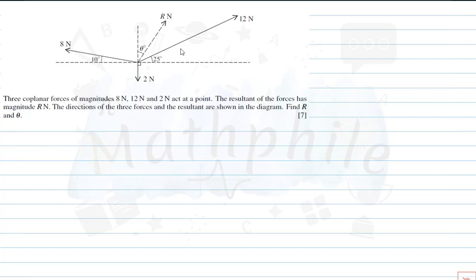So this is a past question: three coplanar forces of magnitude 8 newtons, 12 newtons, and 2 newtons act at a point. The resultant of the forces has magnitude R newtons. The direction of the three forces and the resultant are shown in the diagram. Find R and theta. This is seven marks — don't be deceived by the mark count; just follow the same principles and you'll get through it.